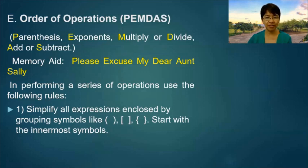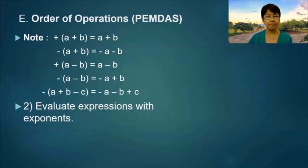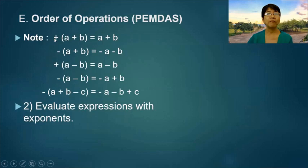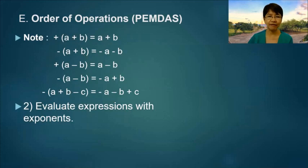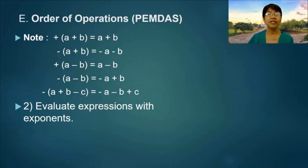In performing a series of operations, use the following rules. Number one: simplify all expressions enclosed by grouping symbols like parentheses, brackets, and braces, starting with the innermost grouping symbol. If a parenthesis is preceded by a positive sign, simply drop the parentheses with no change in the result. If the parenthesis is preceded by a negative sign, then everything inside will be multiplied by the negative sign, giving you negative A and negative B. In the last example, we have negative A, negative B, and positive C.